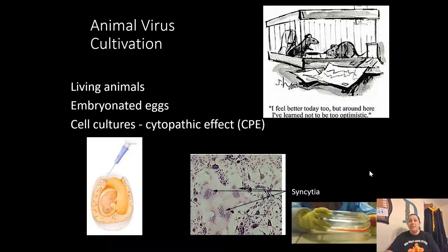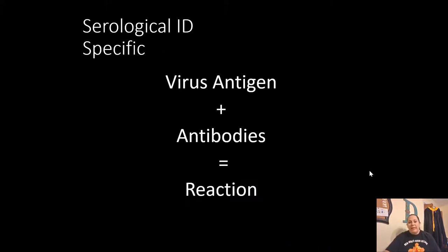Another way to cultivate viruses is through animal cultivation — growing them in living animals like rats. We can also use embryonic eggs, since live cells are still present in them. Additionally, we can use cell cultures and look for the cytopathic effect (CPE), which refers to cell degeneration. To identify whether a virus was present in a patient's blood, we use serological identification: looking for the virus antigen plus antibodies, which produces a detectable reaction. One of the main methods for this is the Western blot.